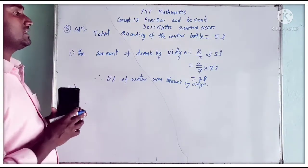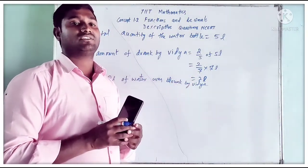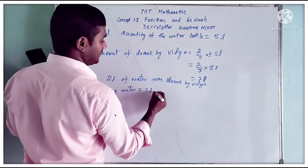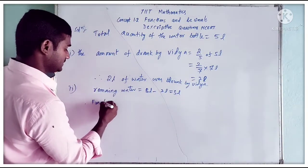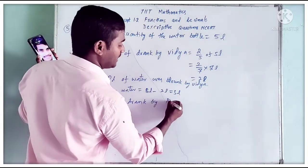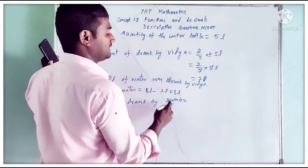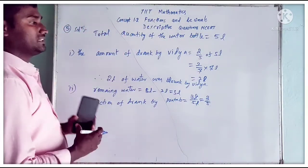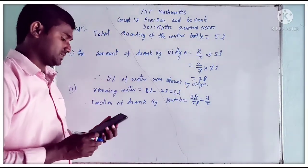Second question: what fraction of the total quantity of water did Pratap drink? Vidya drank 2 liters, so remaining water equals 5 liters minus 2 liters equals 3 liters. The fraction of water drank by Pratap equals 3 liters by 5 liters. Litres cancel, giving 3 by 5. So Pratap drank 3 fifths of the total water bottle.